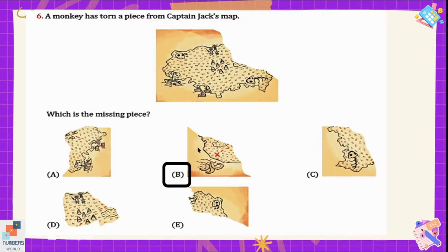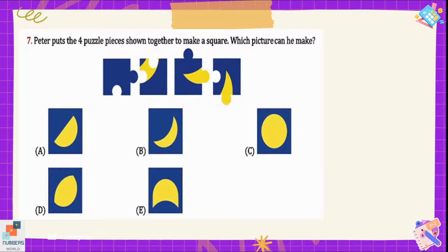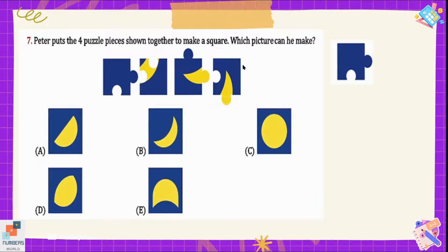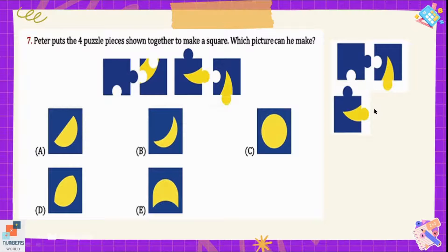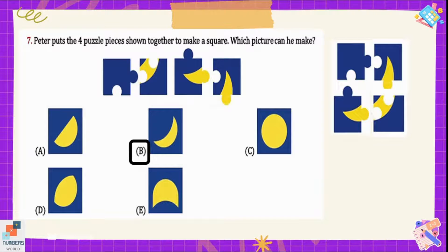Question number seven: Peter puts four puzzle pieces together to make a square — which picture can he make? We can arrange the pieces corner-wise: place one piece at the top left corner, another on the other side, and arrange the remaining two pieces at the bottom left and right corners. We can see a shape of a moon, so option B will be the picture we get after joining the puzzle pieces.